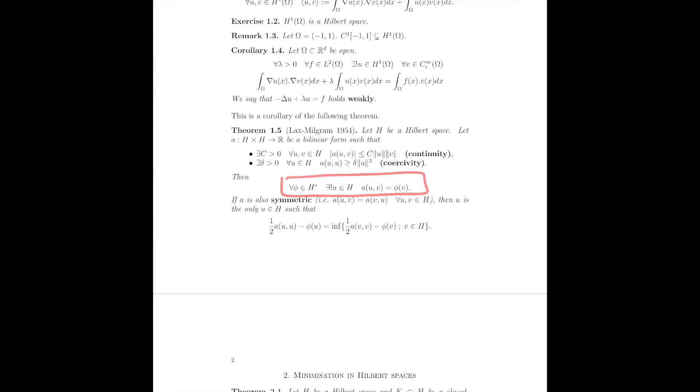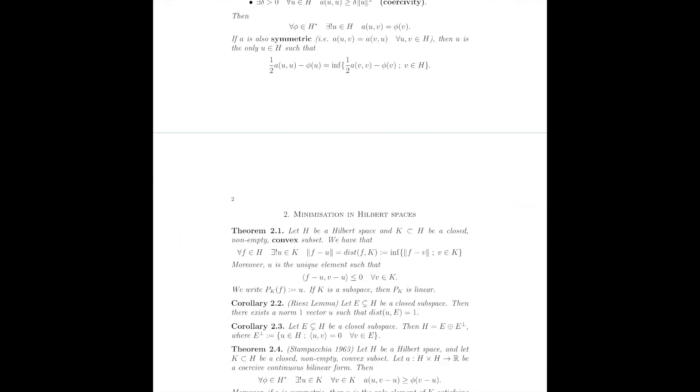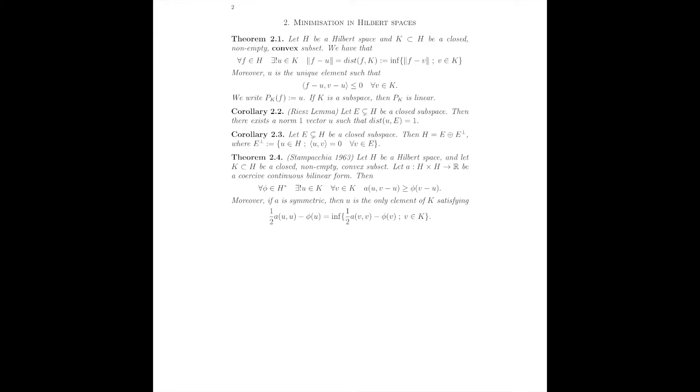Let me show you the Lax-Milgram theorem again for comparison: a continuous coercive bilinear form with no convex set — we work on the whole space and find a unique solution H to an equality where the bilinear form equals the action of a linear functional. In Stampacchia's theorem, it's an inequality rather than an equality between the bilinear form and the linear functional. I'll show in a second that this is a little more general. And just like the second part of Lax-Milgram, when A is symmetric we get a neat variational characterization of the solution as the minimizer of a certain quadratic function.